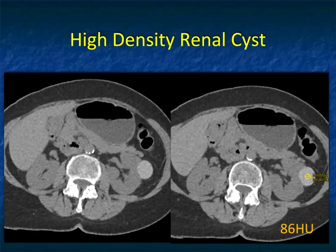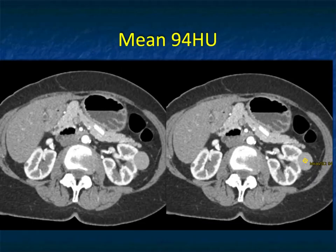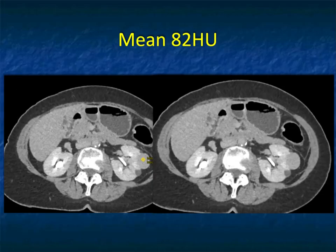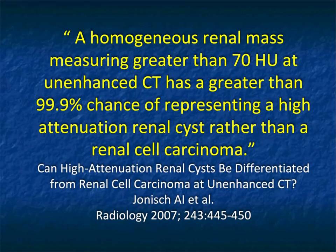Several rules: One — well-defined, over 70 Hounsfield units on non-contrast, it's always benign. Two — if you have a lesion like this, you have to say you're concerned about malignancy but recommend a non-contrast scan to be certain. Three — if a lesion doesn't change between two phases, there's a good chance there's no enhancement and it's a high-density renal cyst. The key is you don't want to miss any tumors, but you don't want to be over-calling things.